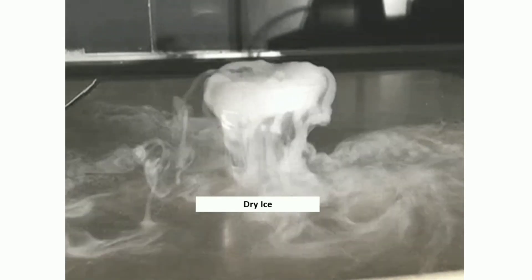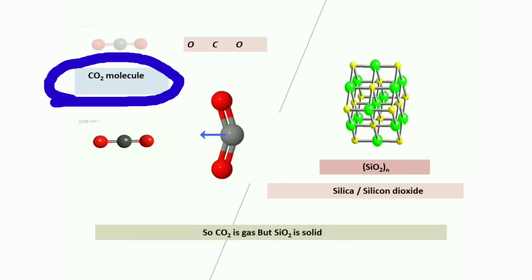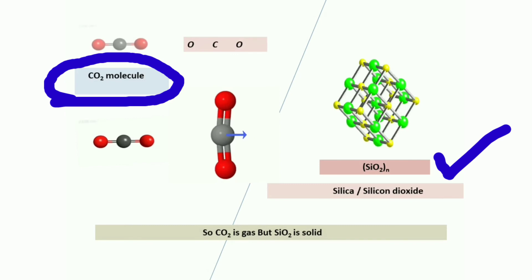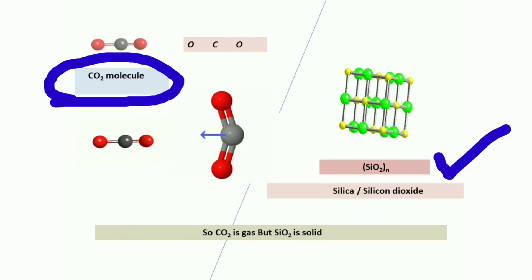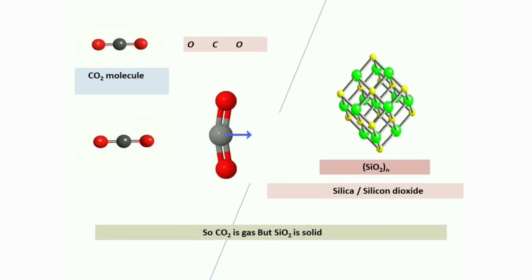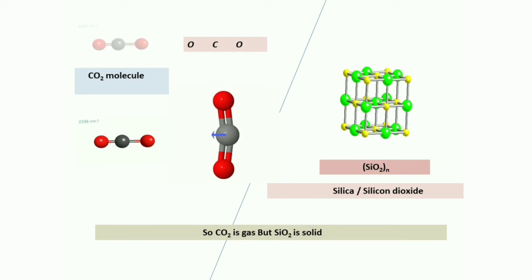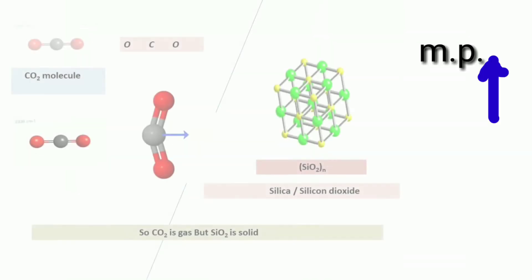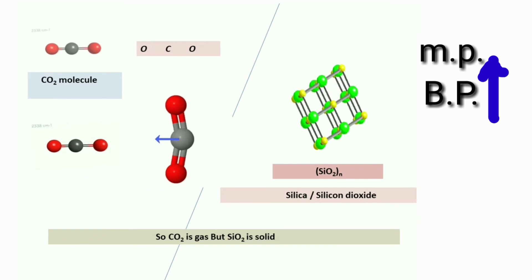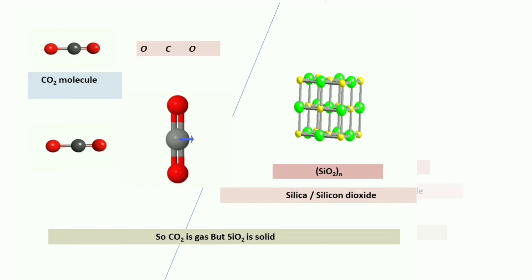So you may get the reason behind carbon dioxide gas and silicon dioxide solid. Because in a single sentence, carbon dioxide is a single molecule but silicon dioxide is a polymer molecule which makes covalent bonds and makes a greater melting and boiling temperature. I hope you get that why carbon dioxide is gas but silicon dioxide is solid.